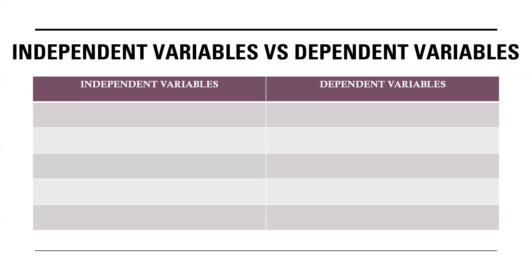Moving towards the differences between independent and dependent variables, let us go one by one. Independent variables do not depend upon any other variables available while doing research work — they stand on their own. Whereas dependent variables depend purely on other variables; in other words, they depend upon the independent variables in most cases.